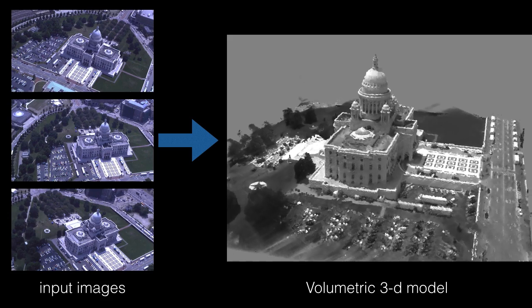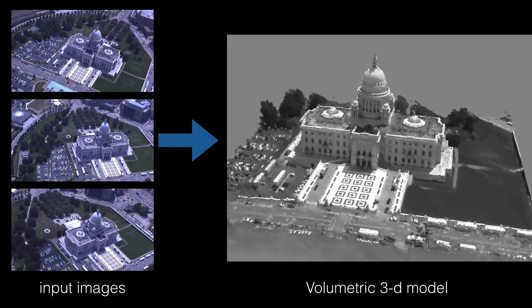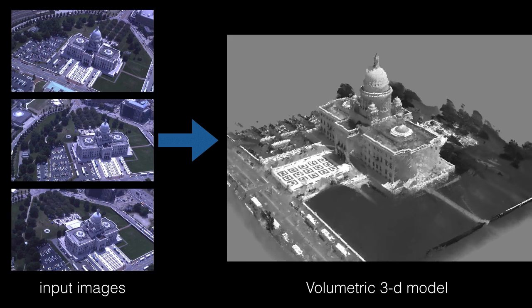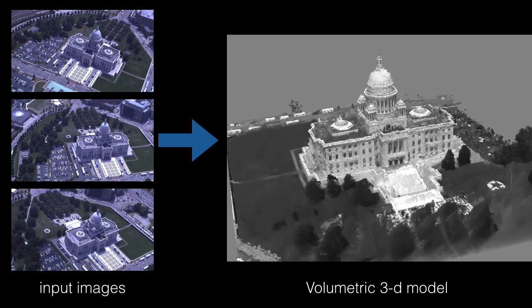We present a probabilistic formulation for volumetric 3D reconstruction. Our method takes images captured from multiple viewpoints and produces a dense and accurate 3D model. In the video, you see renderings of our model from novel viewpoints.